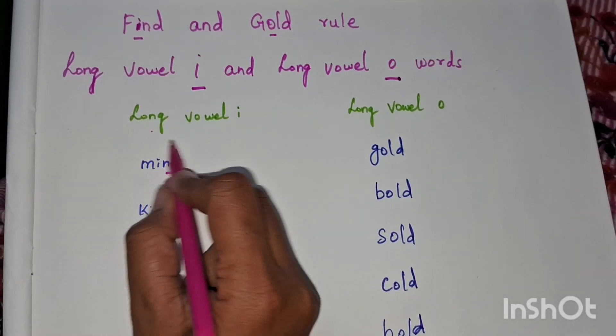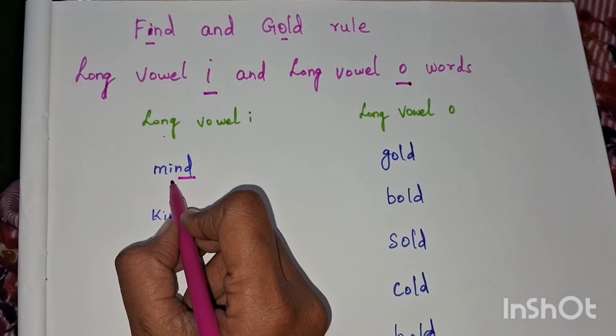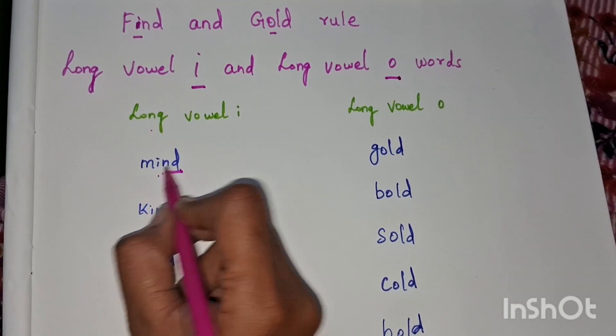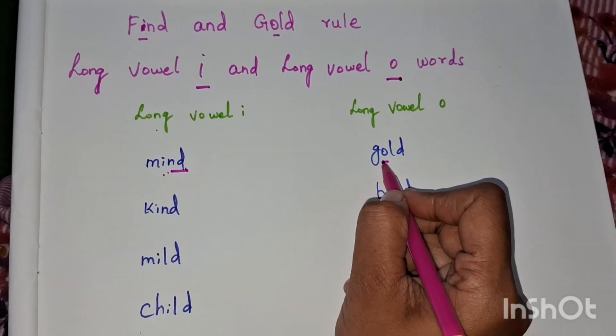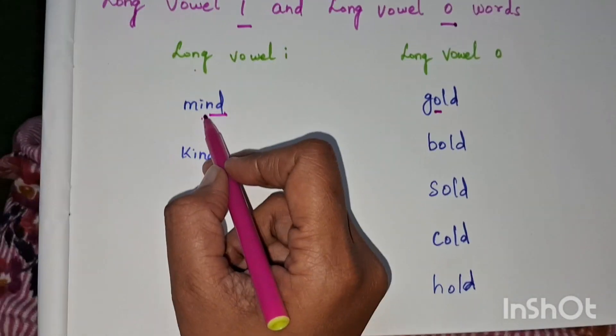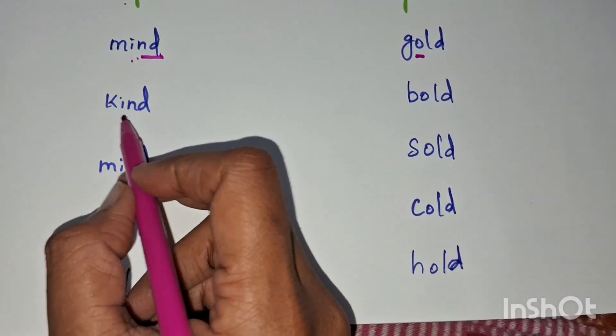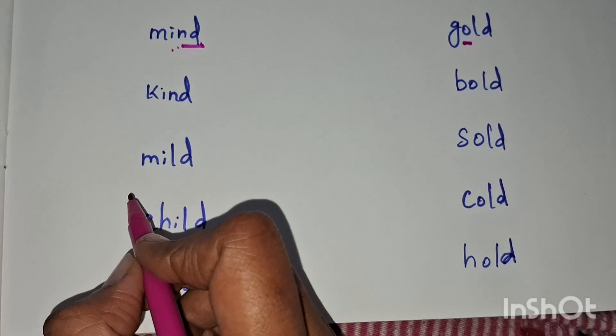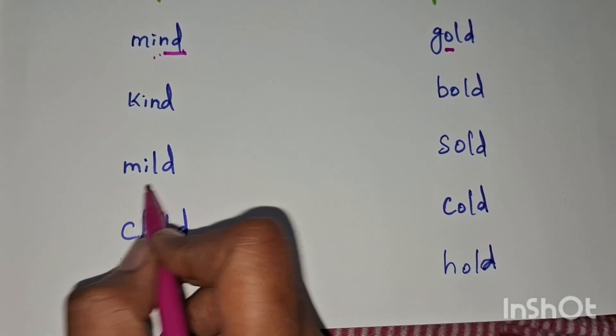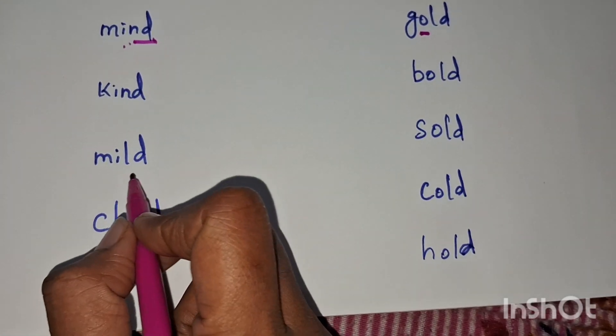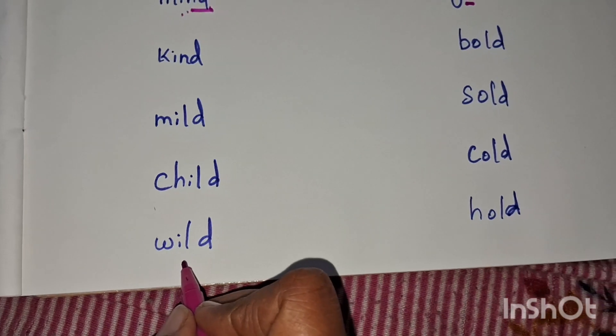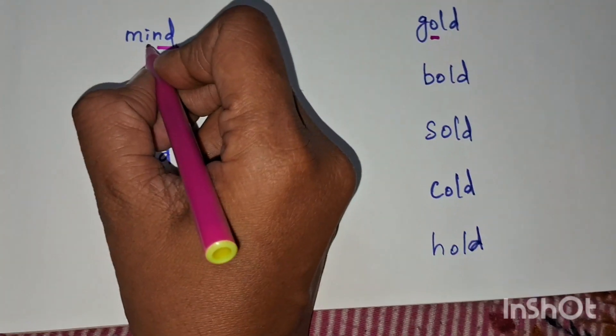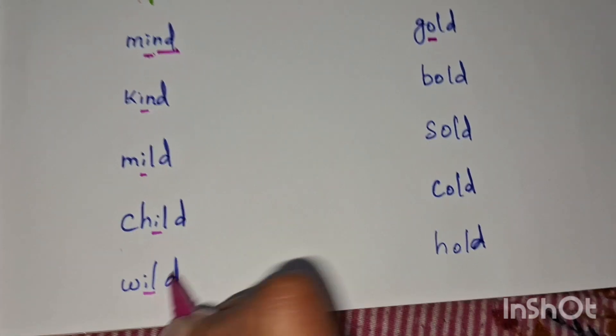Okay, this is a closed syllable word. Before the two consonants, i and o say the long vowel. Mind, mind. Kind, kind. Mild, mild. Child, child. Wild, wild. So these are all long vowel i words.